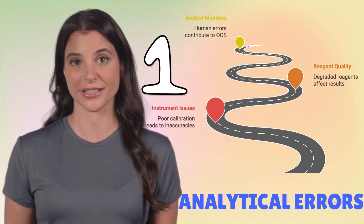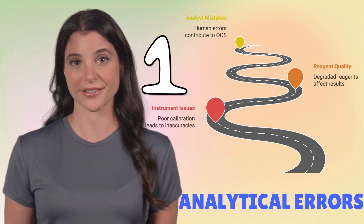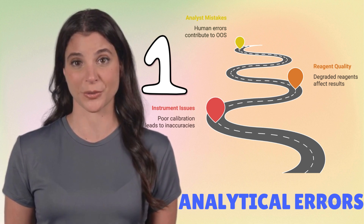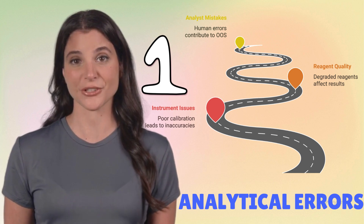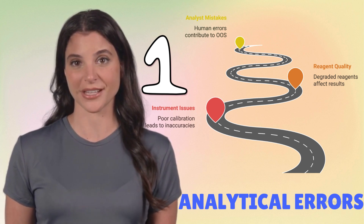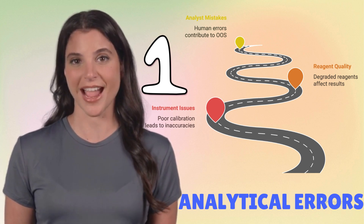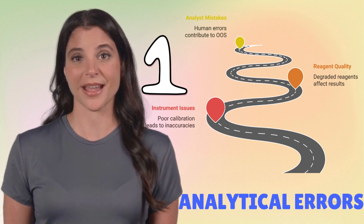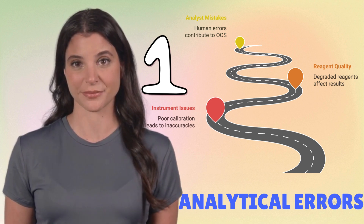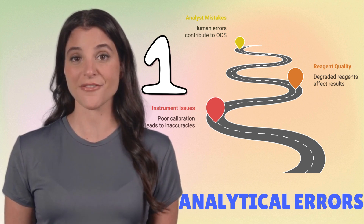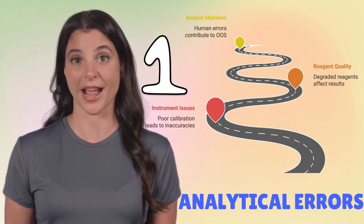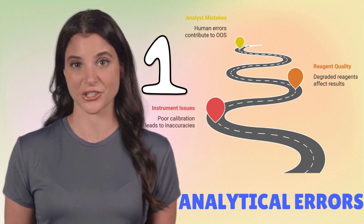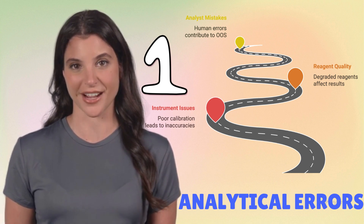Reagent quality: expired or improperly stored reagents can also contribute to errors. For example, if a buffer solution degrades over time, it could impact the accuracy of pH measurements. Even with well-maintained equipment and high-quality reagents, analyst mistakes — human error — remain a factor.